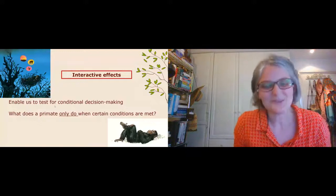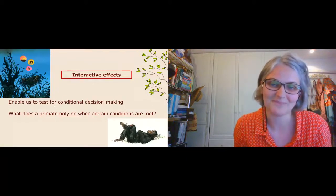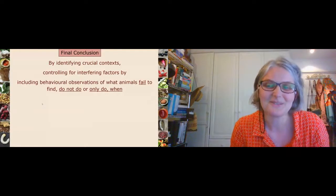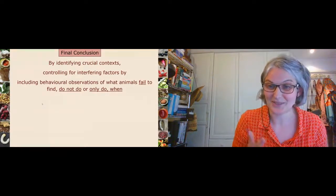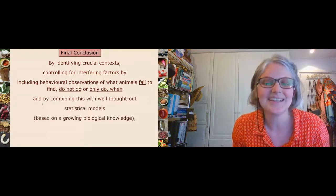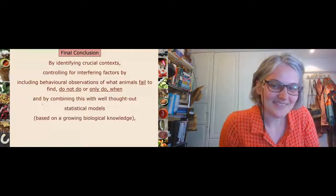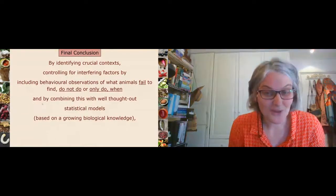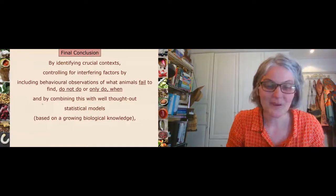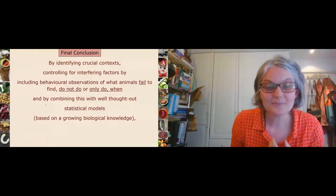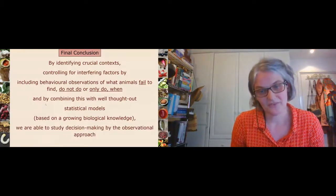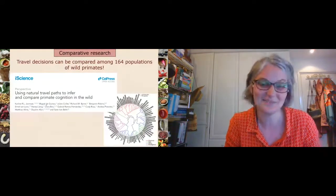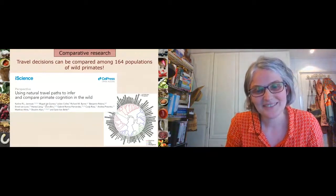Chimps only leave earlier for figs when those figs are further away. I hope I've convinced you that by identifying crucial context, controlling for interfering factors, including behavioral observations of what animals fail to find, do not do, or only do under certain conditions, and combining these with well-thought-out statistical models built on growing biological knowledge — we now have decades of data on primate behavior from lab and field studies — we are able to study decision making by an observational approach.